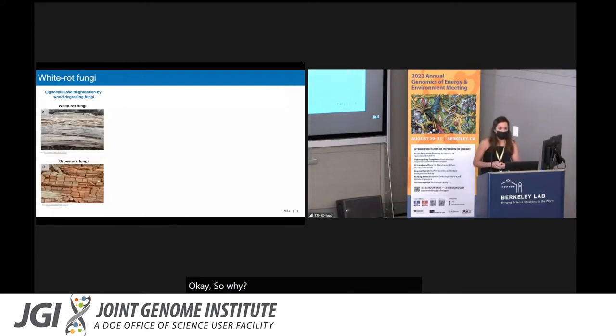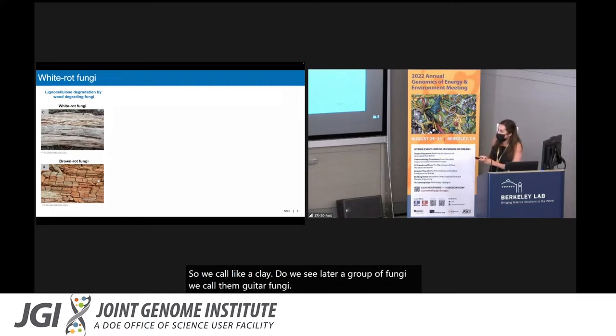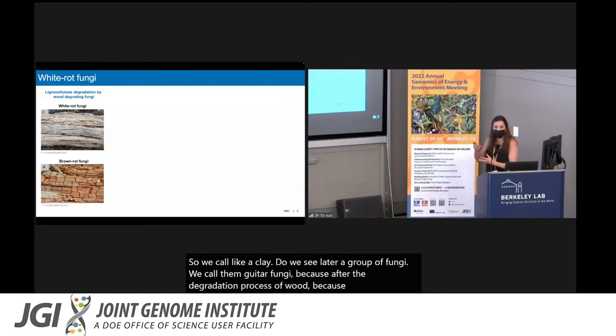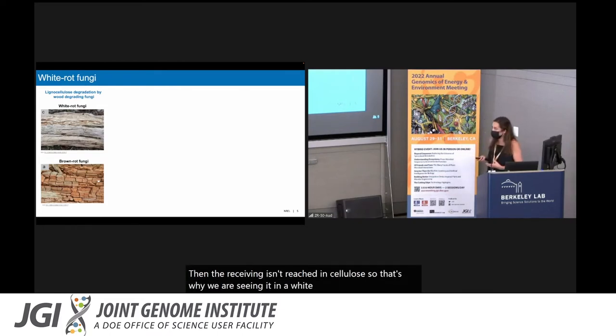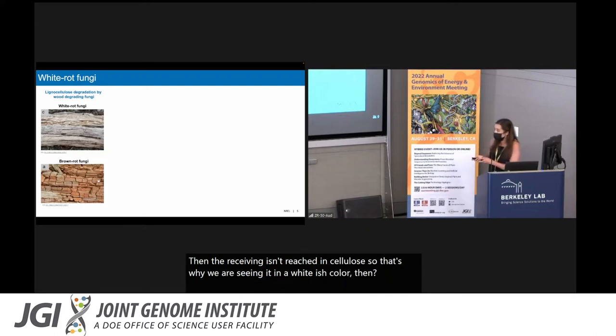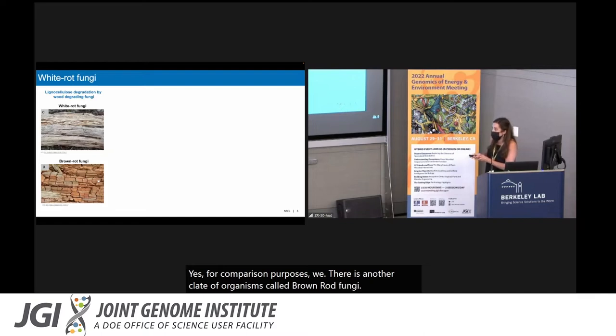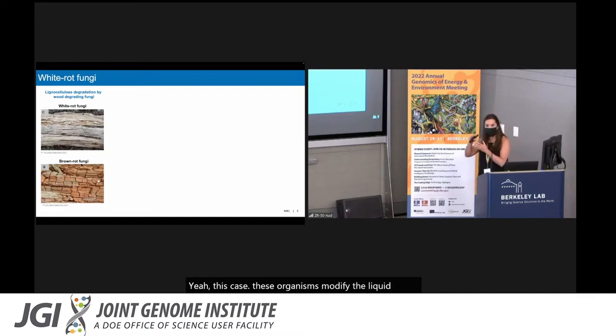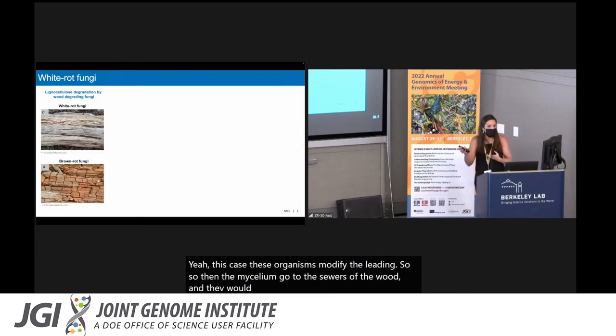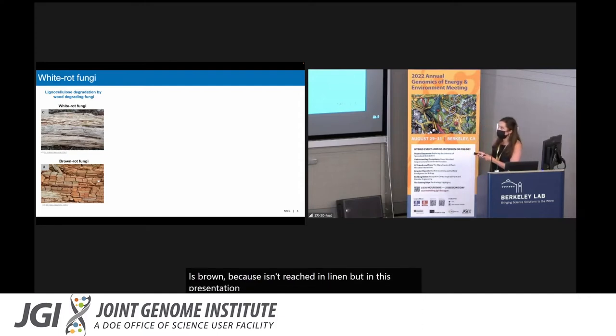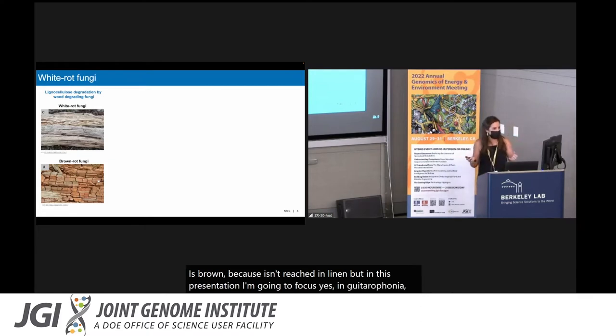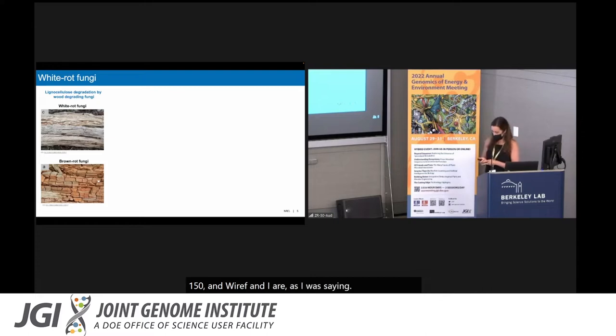So why rot fungi? Maybe some of you are wondering, what is that? We call a clade, a group of fungi, white rot fungi, because after the degradation process of wood, they remove the lignin, then the residue is enriched in cellulose. That's why we're seeing it in a whitish color. For comparison purposes, there is another clade of organisms called brown rot fungi. In this case, these organisms modify the lignin, so the mycelia go to the sugars of the wood, and they utilize the sugars as a carbon source. Then the residue is brown because it's enriched in lignin. In this presentation, I'm going to focus on white rot fungi. Lignin is one of my passions, and white rot fungi are the most efficiently degrading this polymer.